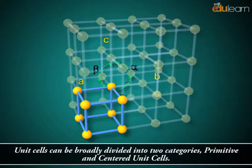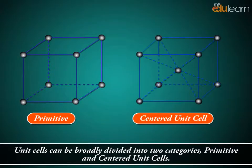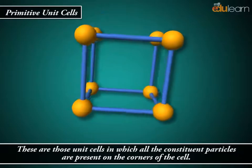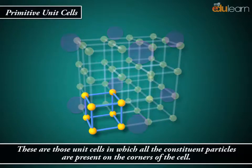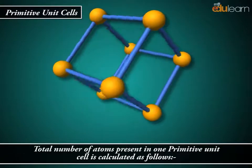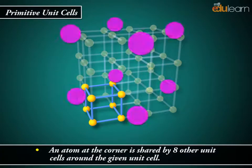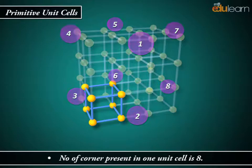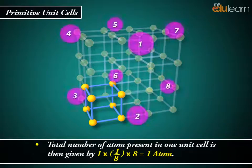Unit cells can be broadly divided into two categories: Primitive and Centered unit cells. Primitive unit cells are those in which all the constituent particles are present only on the corners of the cell. An atom at the corner is shared by eight other unit cells around the given unit cell, so its contribution is 1/8. The number of corners in one unit cell is 8, so the total number of atoms present in one primitive unit cell is 1/8 × 8 = 1 atom.